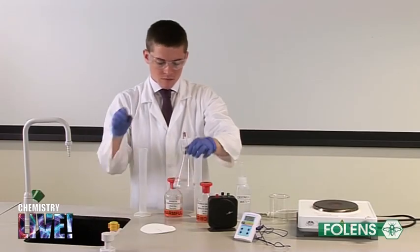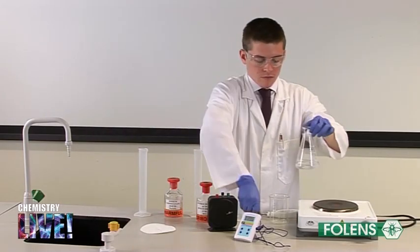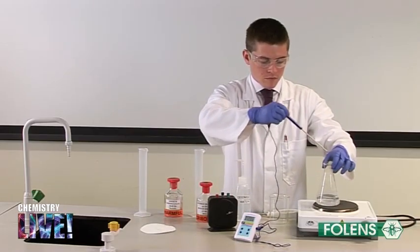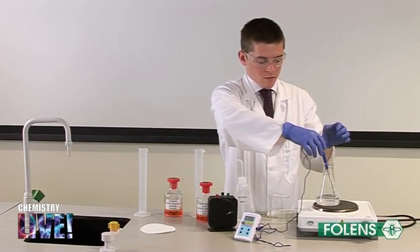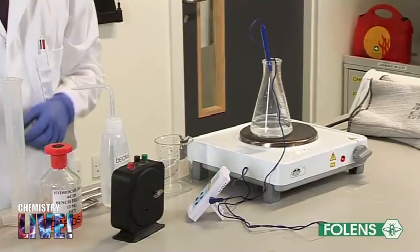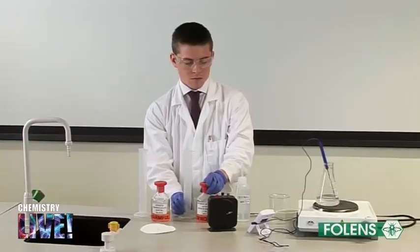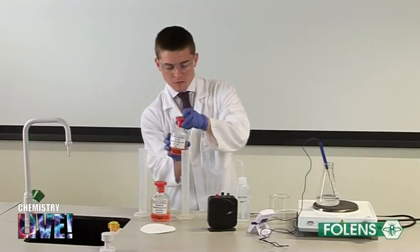Warm the flask using a hot plate or a Bunsen burner to a temperature of about 30 degrees Celsius. Warm a beaker containing 10 centimeters cubed of hydrochloric acid to the same temperature.